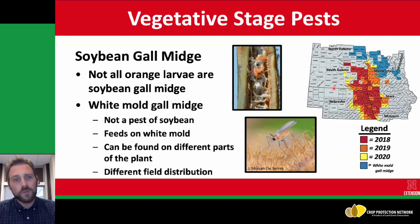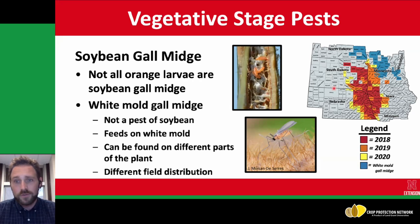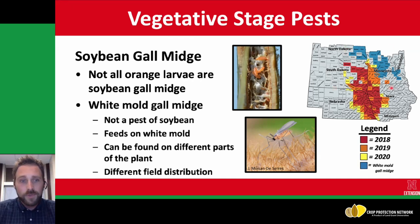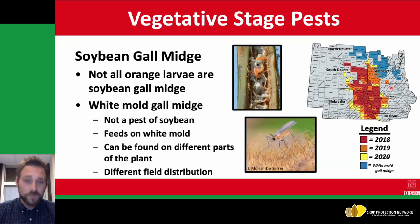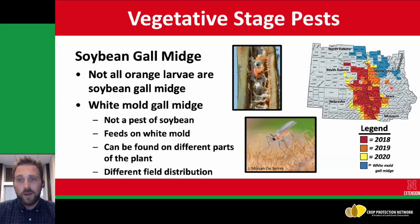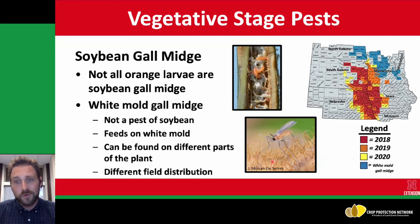Not all orange larvae are soybean gall midge larvae. White mold gall midge was documented in Minnesota in 2020 by Cook et al., and it's really important to distinguish its orange larvae from soybean gall midge because white mold gall midge is not a pest — it only feeds on white mold. It can be found on different parts of the plant, not just the base, but wherever white mold is present. White mold can also disappear in hot, dry weather. If you're ever in question, contact your extension specialist for help with an ID. This species also has a different distribution, and the adults look different, though you're not likely to see the adults.